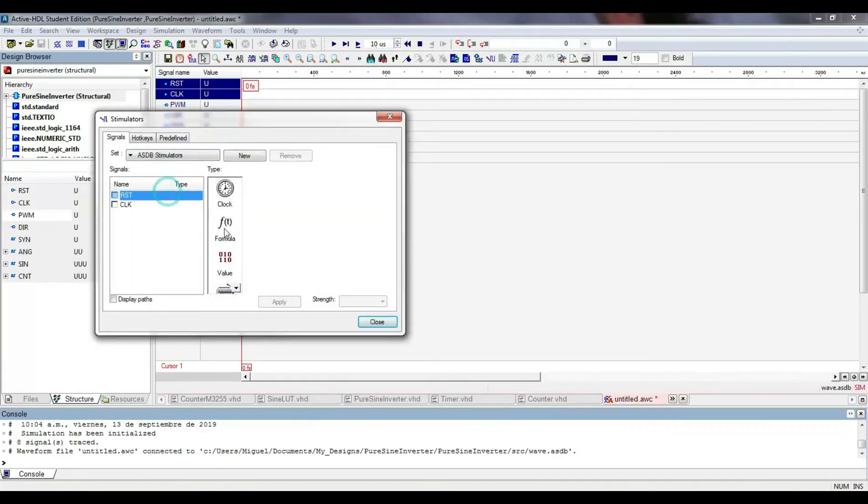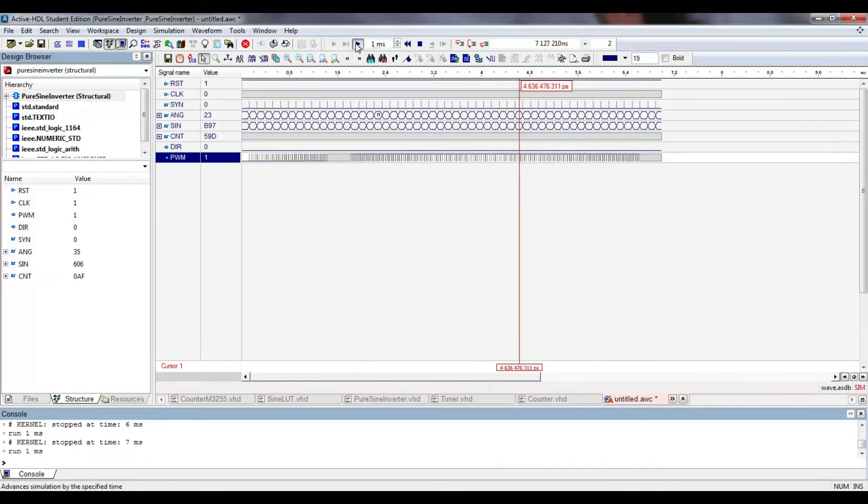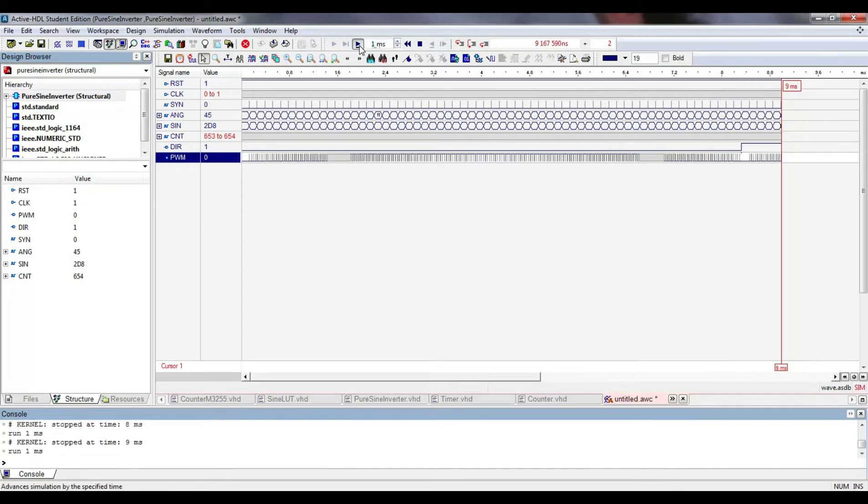I set the reset signal with a formula which starts at 0, and 10 nanoseconds later, it goes high. The clock signal is set to 100 MHz clock input with a high level at the first half cycle. It's enough to simulate 20 microseconds to realize that the circuit works as expected.